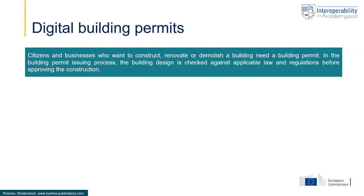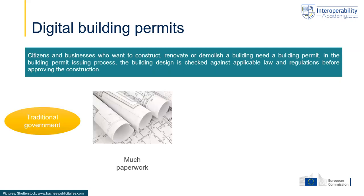Let us first have a closer look at the key characteristics of this process when it takes place in traditional government. In a traditional government, we see a lot of paperwork that needs to be prepared and provided to the government, exchanged within government, and exchanged between the government, citizens, and designers. A lot of preparation and data provision is done on paper — that is one key characteristic.